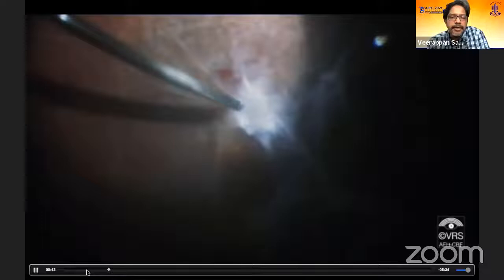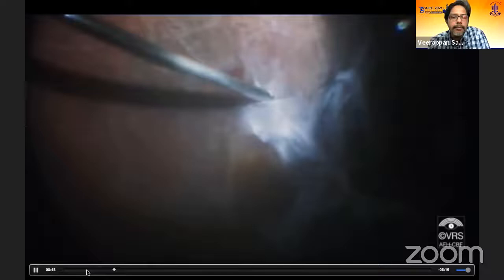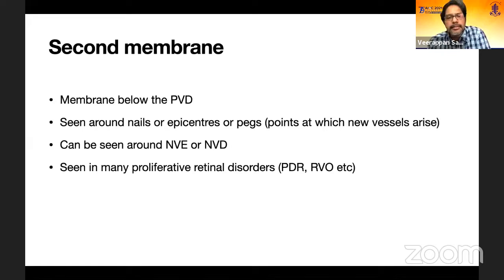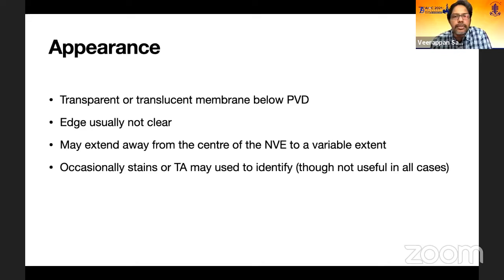The first step is always to address the second membrane — the membrane just below the PVD. Once you cut the PVD and enter the sub-hyaloid space, you must use a sharp instrument to identify and get into the second membrane plane. This is very critical for surgical success, because if you operate in the wrong plane — working in the sub-hyaloid space without taking down the second membrane — you'll get difficult membrane peeling, leading to multiple iatrogenic unintended breaks and uncontrollable bleeding. The second membrane is a small translucent or transparent membrane seen around the epicenters where neovascularization arises, and it can also be seen in other vascular disorders.